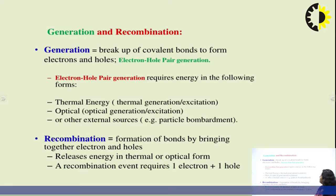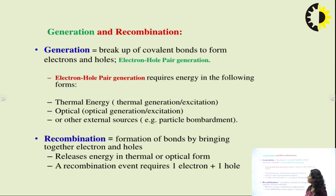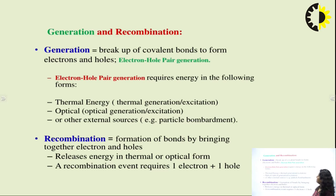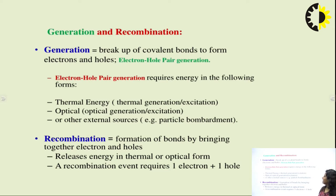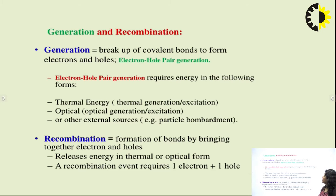Electron hole pair generation requires energy in the following forms — there are three types of energy. First is thermal energy, which is basically thermal generation or excitation. The second is optical energy, which is optical generation and excitation. The last is external sources such as particle bombardment. In thermal energy, thermal excitations and thermal vibrations lead to generation of the electron hole pair. In optical generation, there is breaking of bonds in the lattice structure producing electron and hole pair.